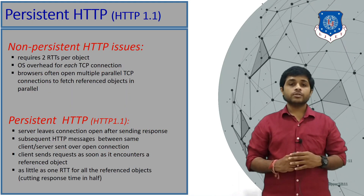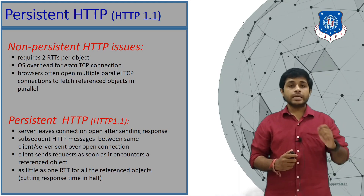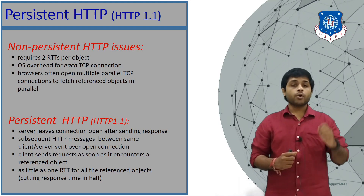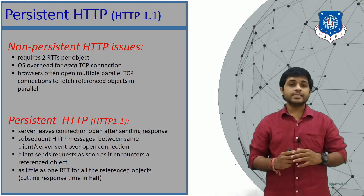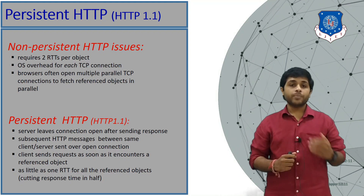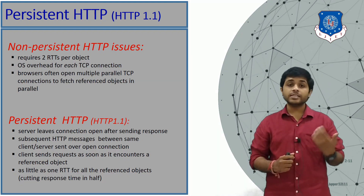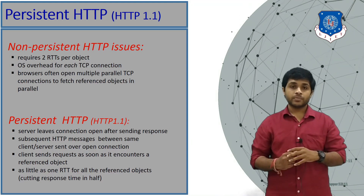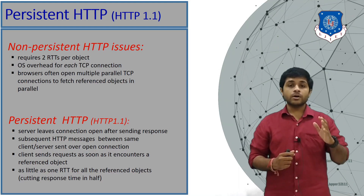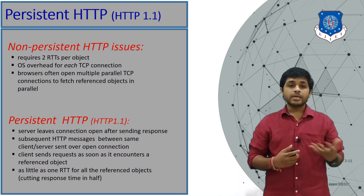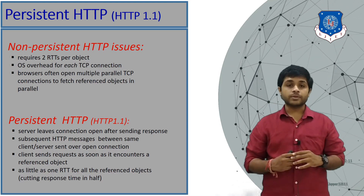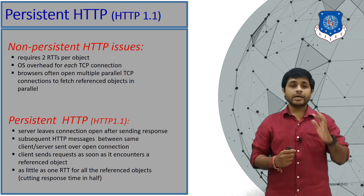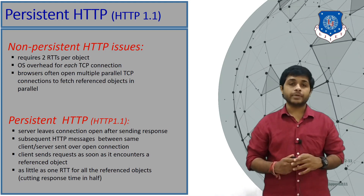Comparing the two methods: non-persistent HTTP requires two RTTs per object, has OS overhead for each TCP connection, and the browser often opens multiple parallel TCP connections to access many objects at a time. In persistent HTTP, more than one packet can be transferred in one connection and it requires much lower round trip time compared to non-persistent HTTP.